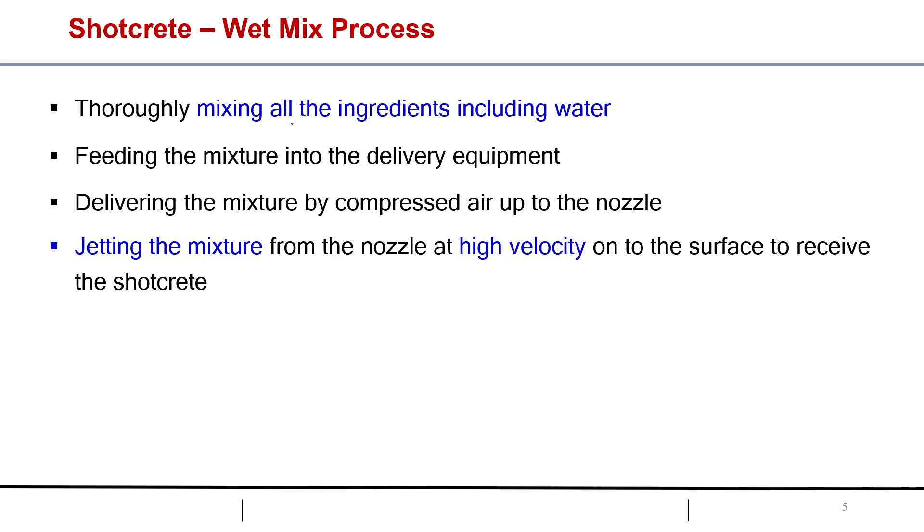Now let's discuss the wet mix process. In the dry mix we first mix the dry material, then it is carried out by the compressed air through a hose, and then just before the delivery we were adding the water. In the wet mix process, mixing all the ingredients including the water.